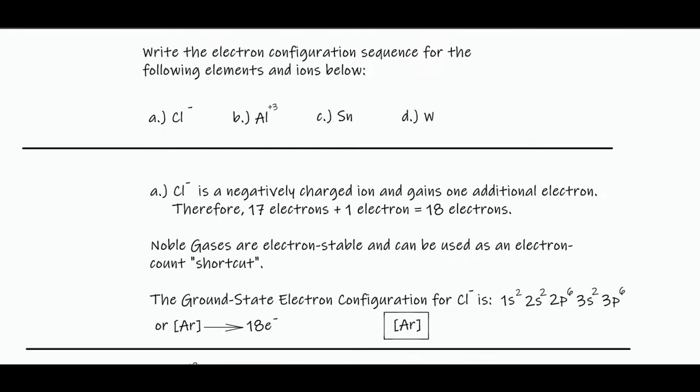Many times you'll be asked to write the electron configuration sequence for the following elements and ions. So we have chloride, aluminum ion, tin, and tungsten.